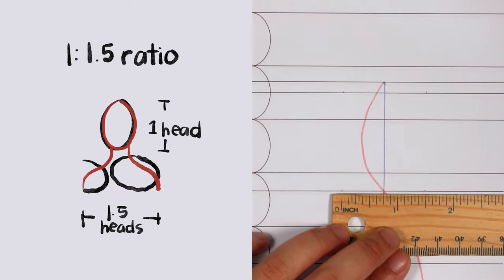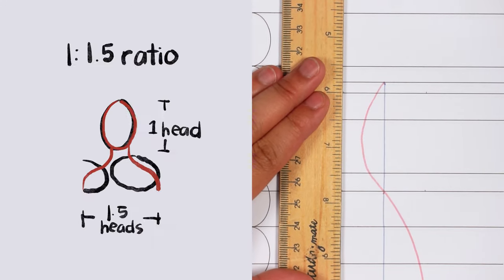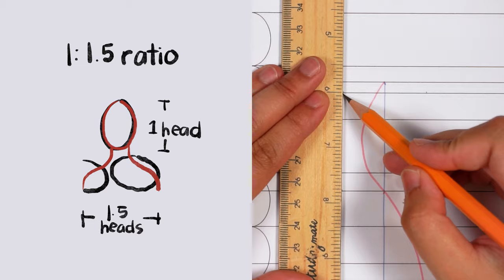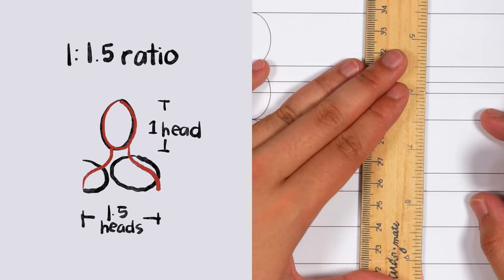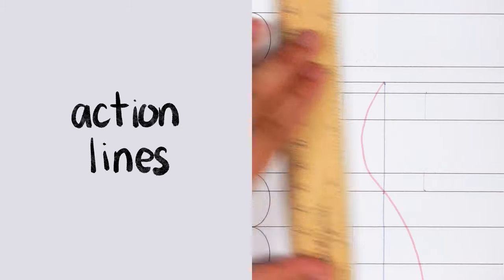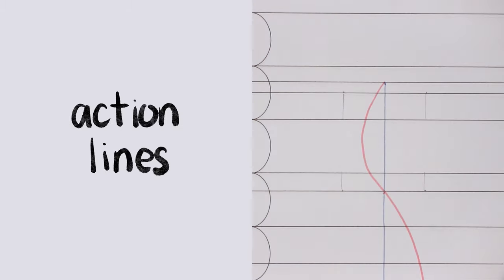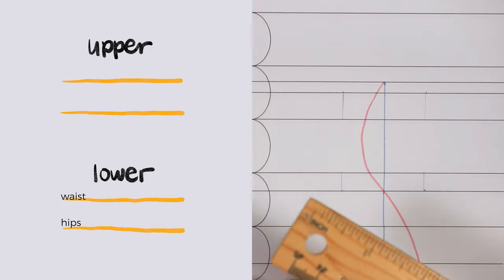I will use that measurement as a guide for the shoulder line, the apex line, the waist line, and the hip line, which are all part of the torso. These lines are actually going to be called action lines and they come in pairs.